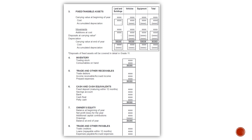Note number eight: trade and other payables. This includes trade creditors, loans payable within 12 months, expenses payable, and accrued expenses. Trade and other payables are current liabilities — the balances of these accounts will fluctuate within the next 12 months, and therefore they are known as current liabilities.